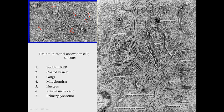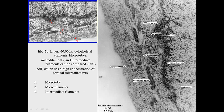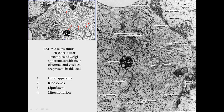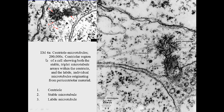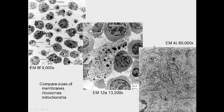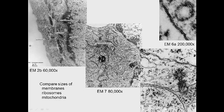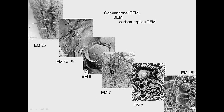At 60,000x magnification the mitochondria are well-defined and microtubules, microfilaments, and polyribosomes are visible. Jumping to 80,000x, ribosomes are quite large and mitochondria larger as well. At 200,000x you can see the lipid bilayer clearly - two dark layers with a light center - as well as microtubules in a centriole. Following mitochondria or ribosomes across magnifications illustrates how increasing magnification reveals progressively finer detail.